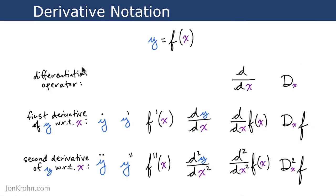Having learned the delta method, we moved on to derivative notation. If we have some function f that takes x as input and produces y, we can represent the first derivative of y with respect to x — the slope between these two variables — using any of several standard notations. For the second derivative — going from distance to speed to acceleration, for example — and third derivatives, there are corresponding notation conventions. We'll expand upon this in Calculus 2 by learning partial derivative notation.